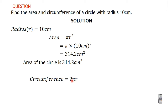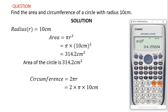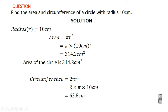Now let's find the circumference. The circumference of a circle is 2πr, so this gives us 2 times π times 10 centimeters. On the calculator, enter 2, then press Shift and the times-10-to-the-power-x button to get π, then multiply by 10. That gives us 20π. Press the S to D button to convert to decimal and we get 62.8318.